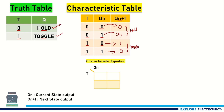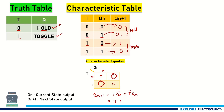Now let us write the characteristic equation using a K-map with T and Qn. The K-map values are 0, 1, 1, 0. Grouping the 1s separately, we get Qn+1 equal to T·Qn̄ plus T̄·Qn. This is nothing but T XOR Qn. So the characteristic equation of the T flip-flop is Qn+1 equals T XOR Qn — the XOR of T and current state gives the next state.